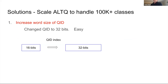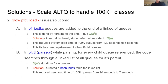Right up front there was a fundamental limit: the queue ID (QID) was only 16 bits, capping queues at 65K. I increased that to 32 bits, which is enough for the foreseeable future. Under test conditions I also noticed that with a large number of classes, it takes a very long time to load PFCTL.